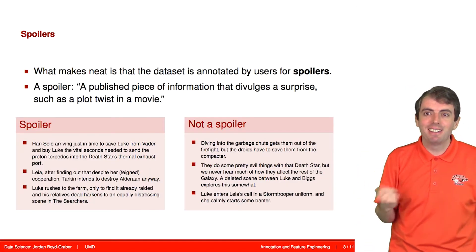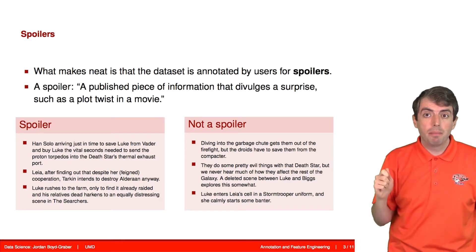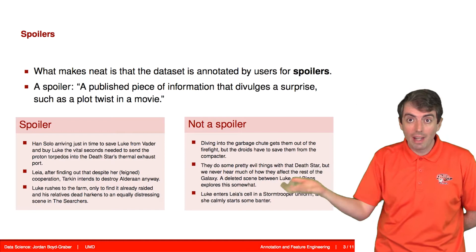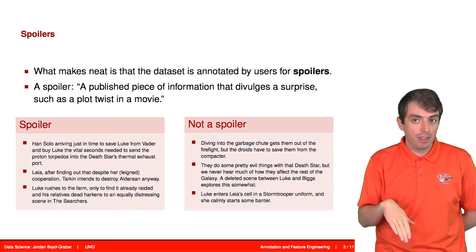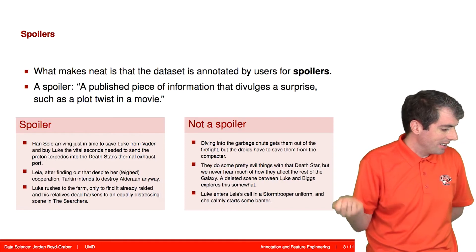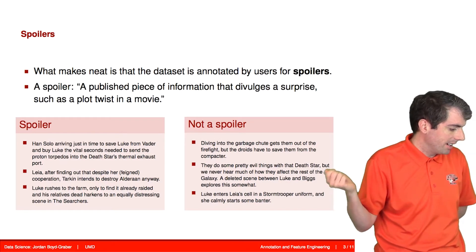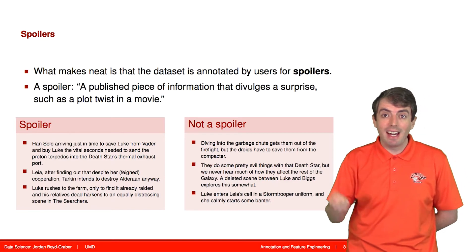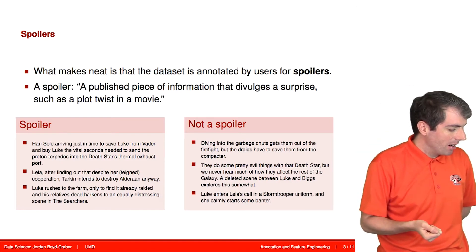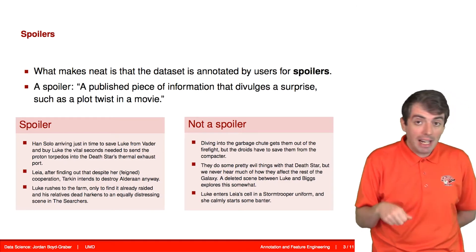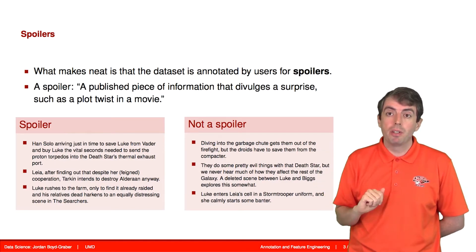TV Tropes is great — I encourage you to check it out. What makes it useful for us is that it also provides some annotation for free. People have gone in and labeled individual sentences as spoilers or not, and you can view TV Tropes with spoilers either on or off. For example, with spoilers off, a sentence like 'Han Solo arriving just in time to save Luke from Vader, buying him the vital seconds needed to send the proton torpedoes into the Death Star's thermal exhaust port' is labeled as containing critical spoiler information. Whereas 'diving into the garbage chute gets them out of the firefight, but the droids have to save them from the compactor' was judged not to contain critical spoiler information.